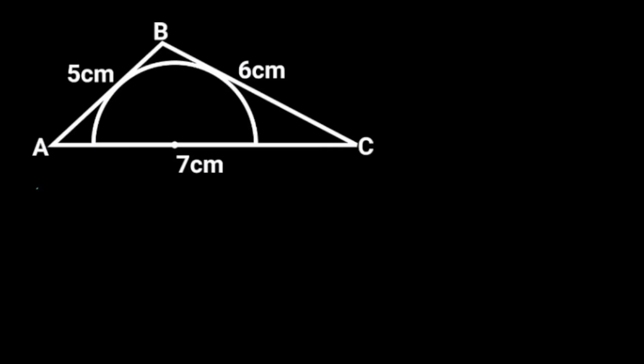This figure is a triangle with a semicircle in it. Lines AB and BC are tangents to the semicircle. If AB is 5 cm, BC is 6 cm, and AC is 7 cm, find the area of the semicircle.